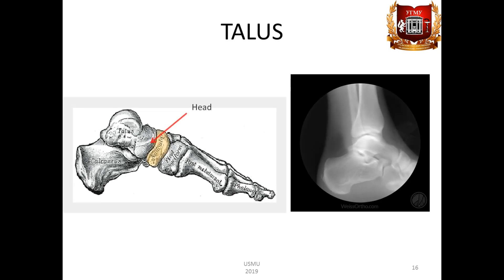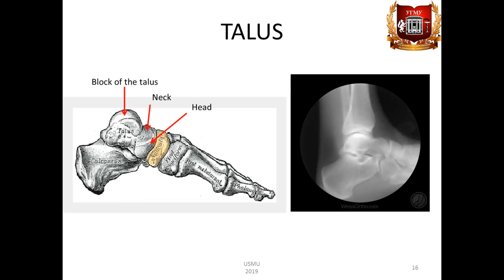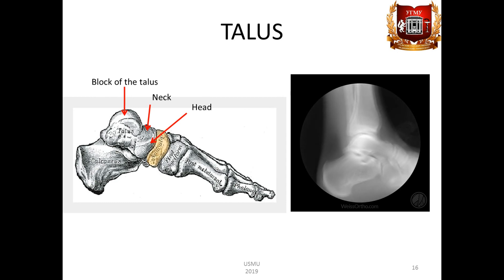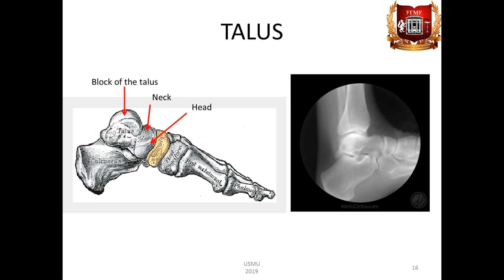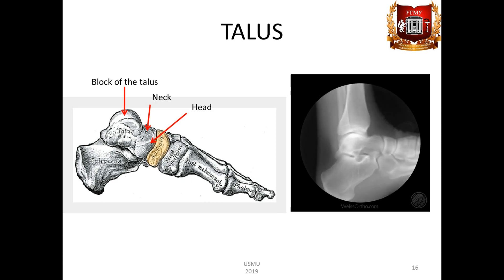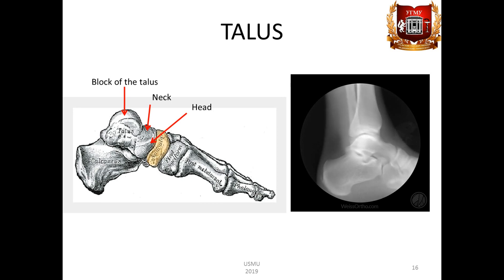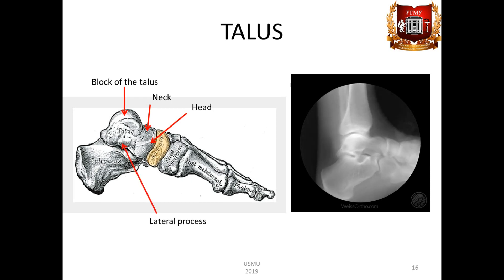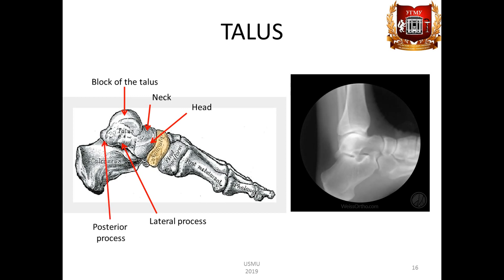The talus has a head, a neck, and a body. The protruding part of the body with three articular surfaces is called the block, trochlea tali. The upper of these surfaces serves to articulate with the tibia. The two lateral surfaces are for the ankles. On the side of the lateral ankle surface there is a lateral process, processus lateralis tali. Behind the block, the posterior process, processus posterior tali, departs from the body of the talus.